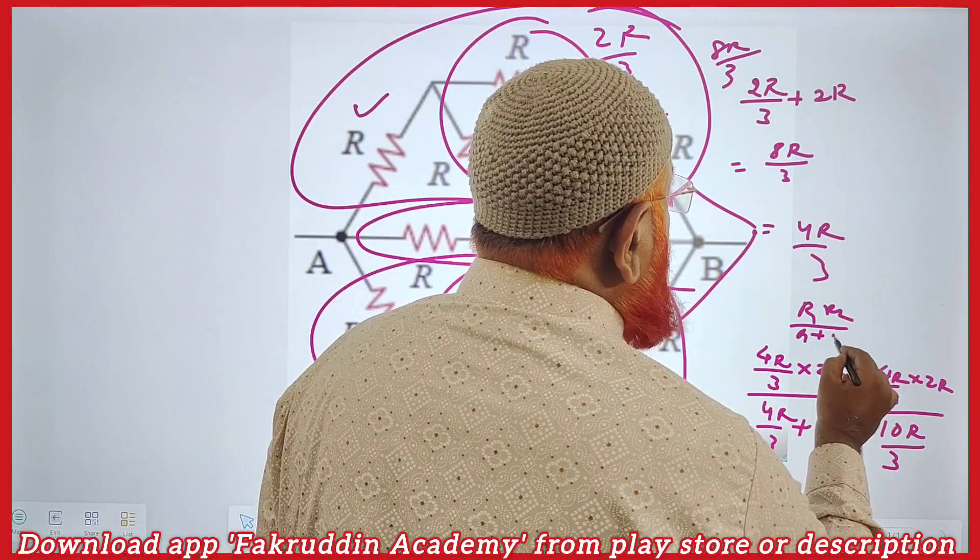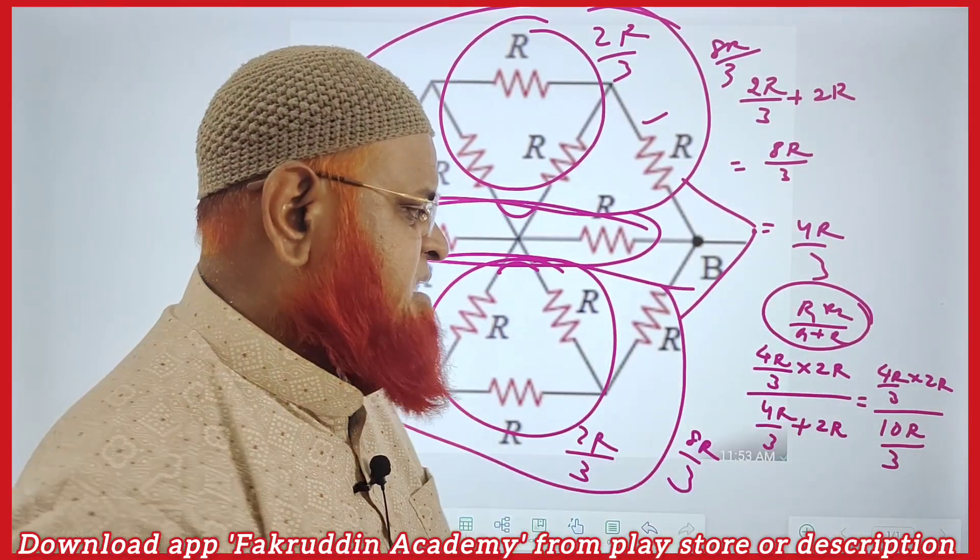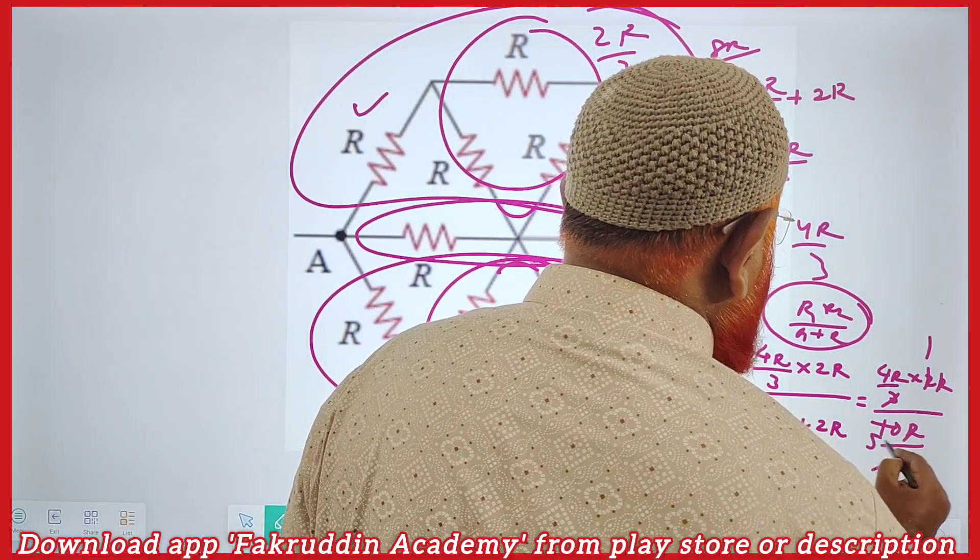R2 by R1 plus R2—this is the form of parallel connection. So then finally we will be getting like this: 3 gets cancelled, R gets cancelled, 2 ones 2 fives, so your